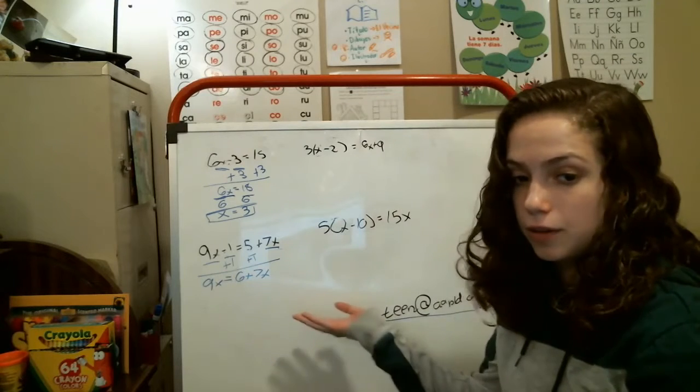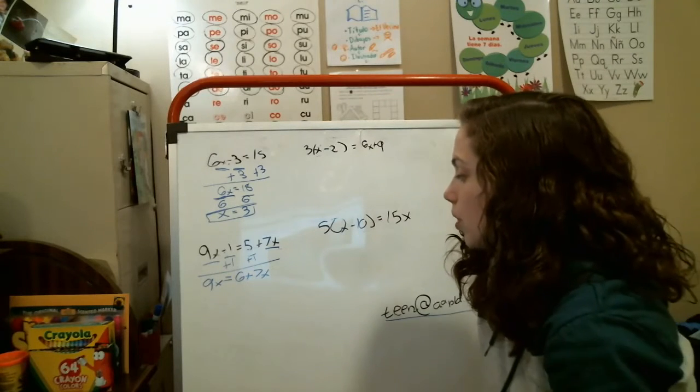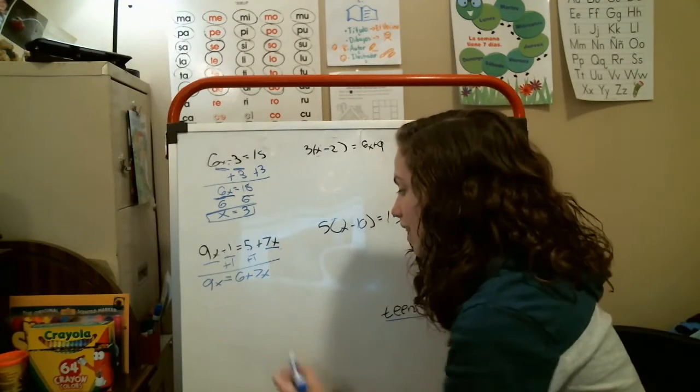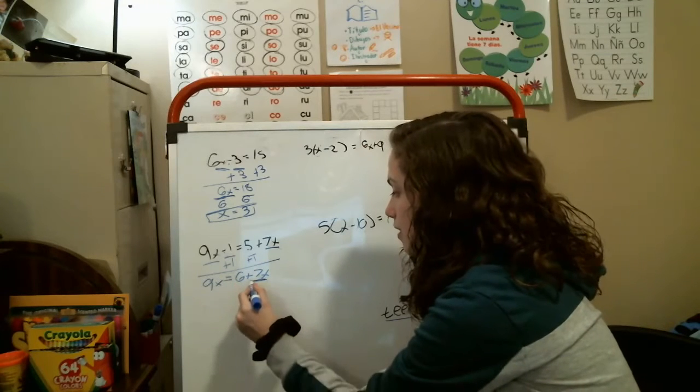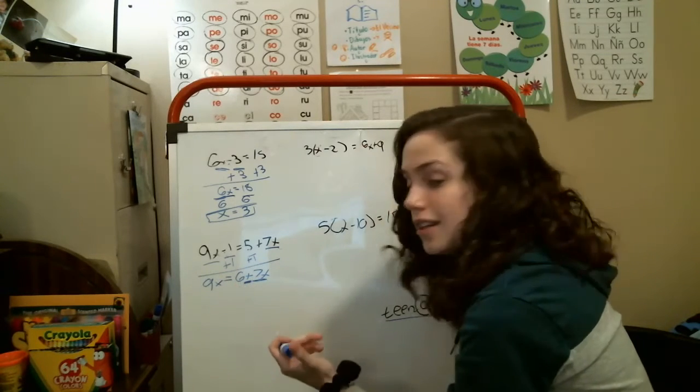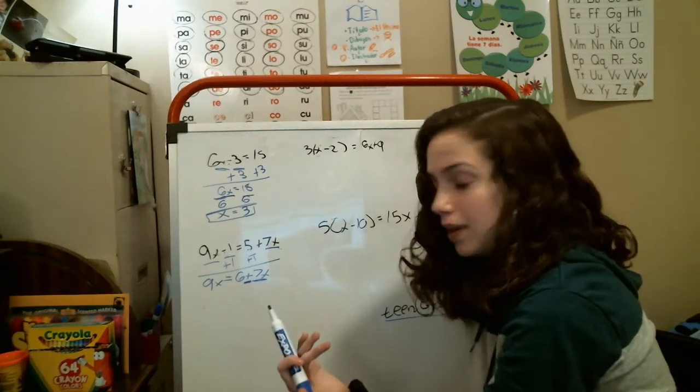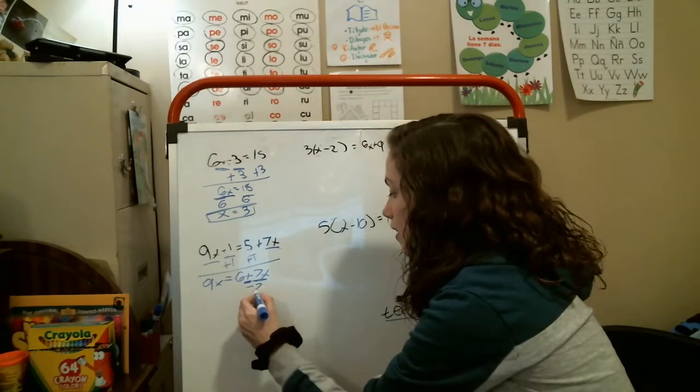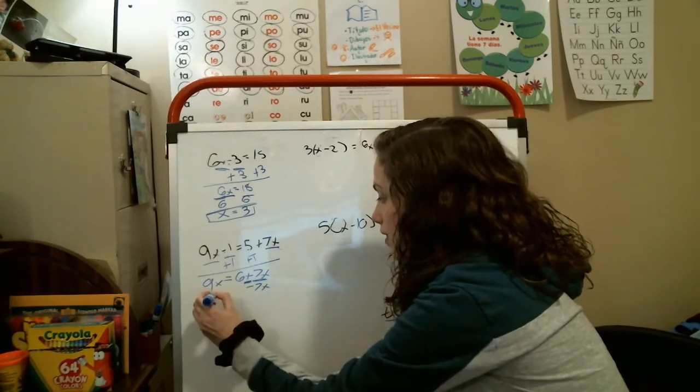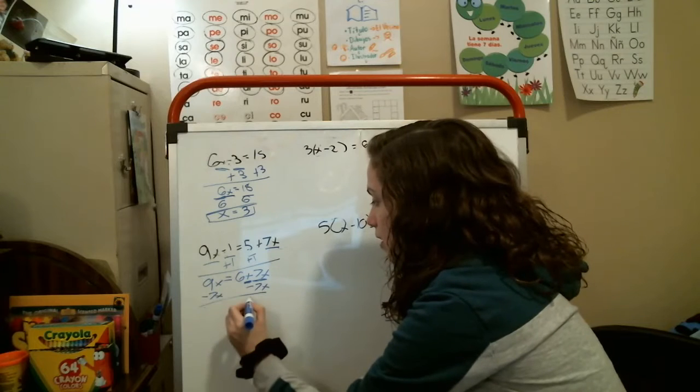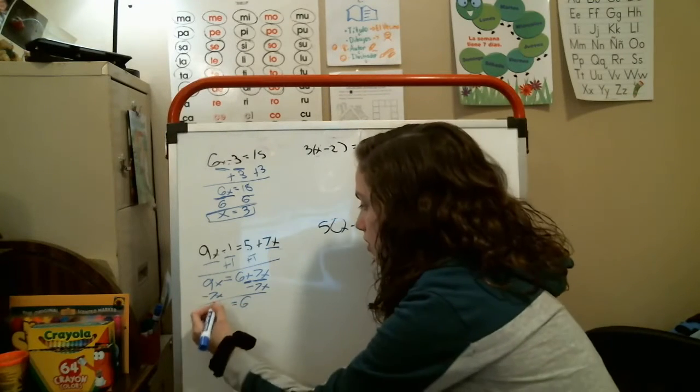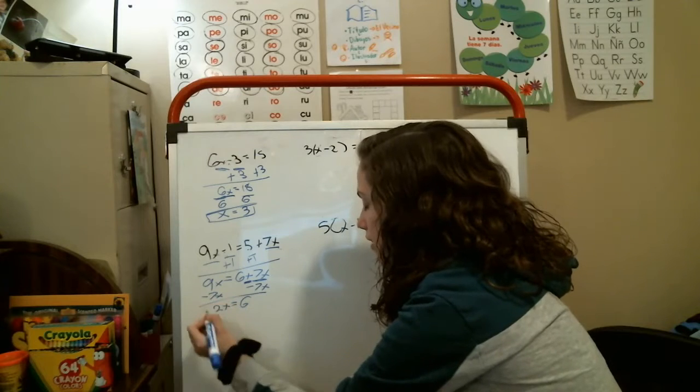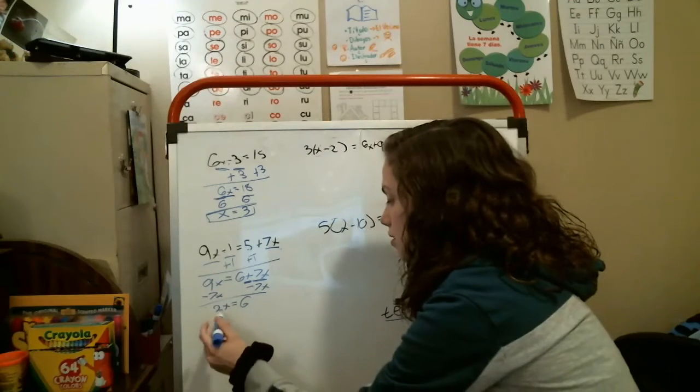Now we have these two x values here. We're going to have to get rid of one, and that would be this 7x because this one is all alone. This time it's a positive, and the opposite of addition is subtraction. You'd have to subtract this 7x here and subtract this 7x here. You'd have positive 6 equals 2x.